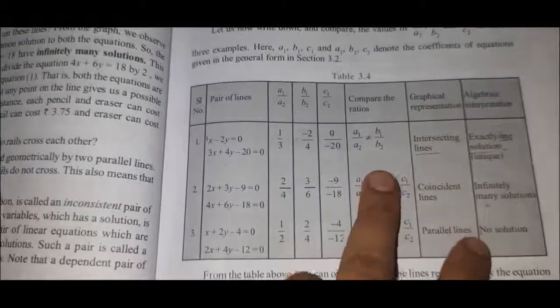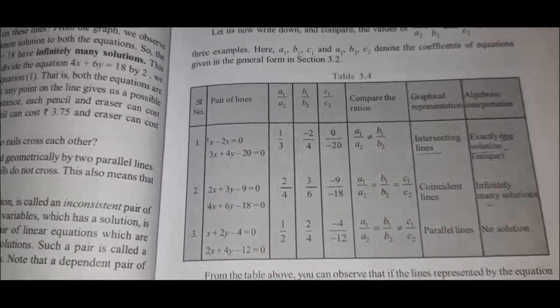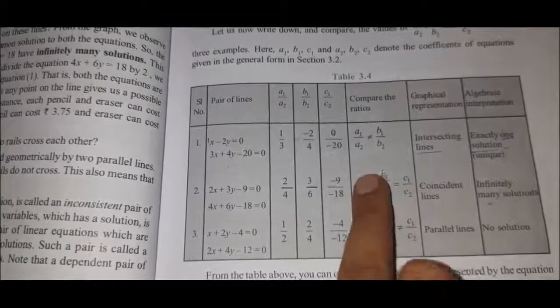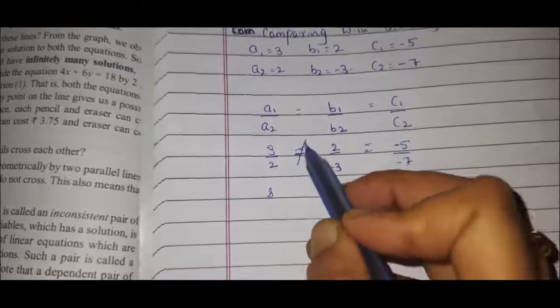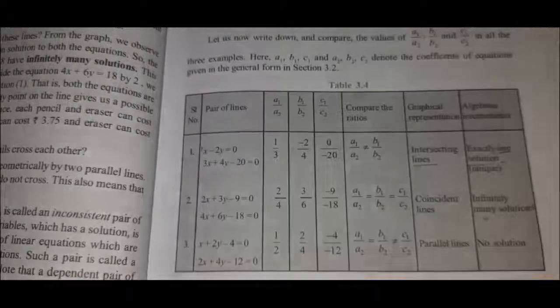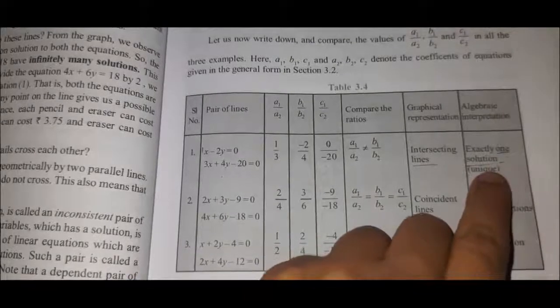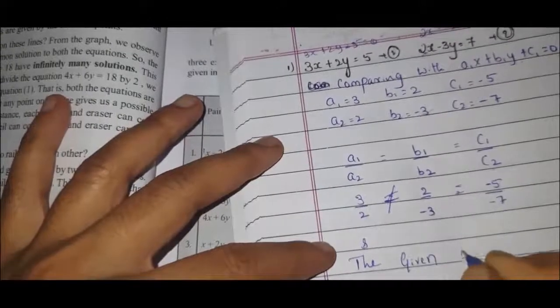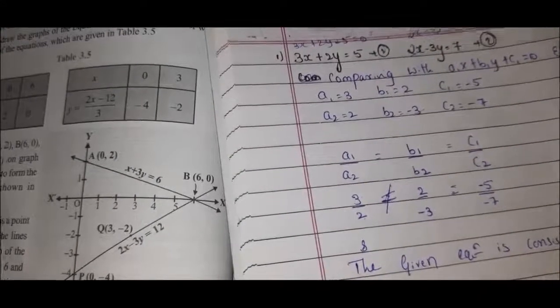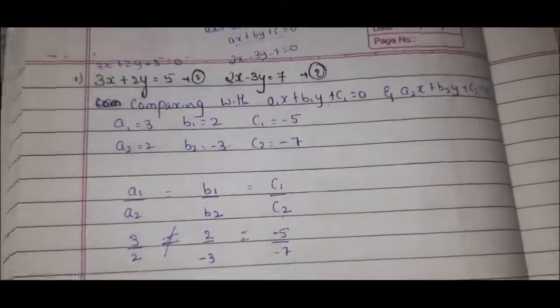When A1 by A2 does not equal B1 by B2, we get one solution or a unique solution. So the given equations are consistent.